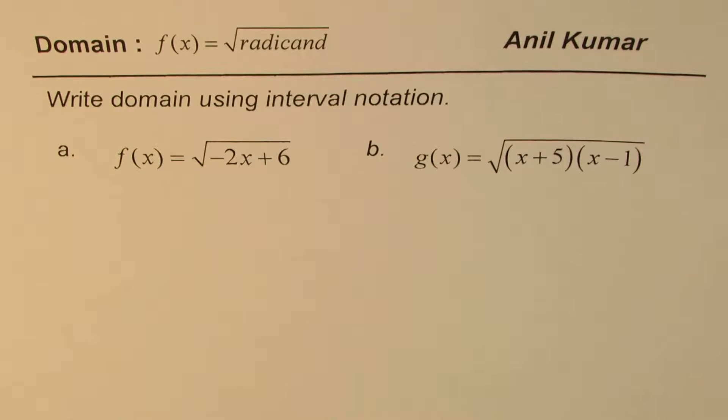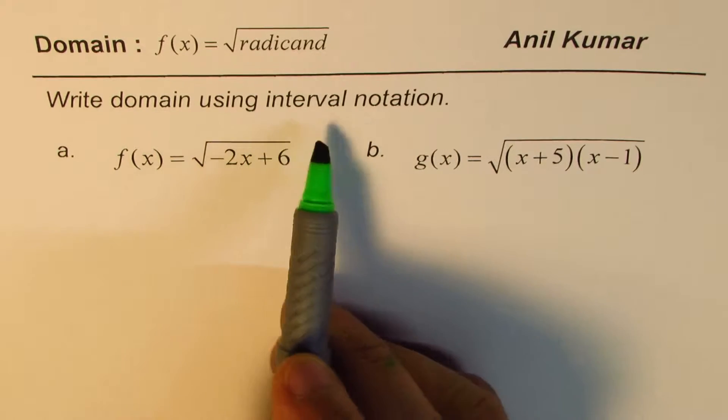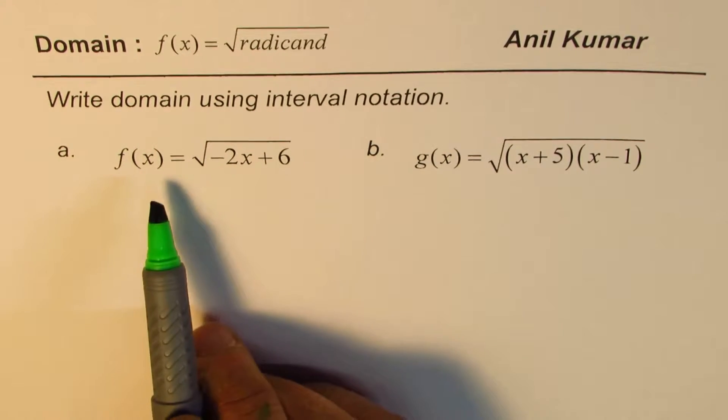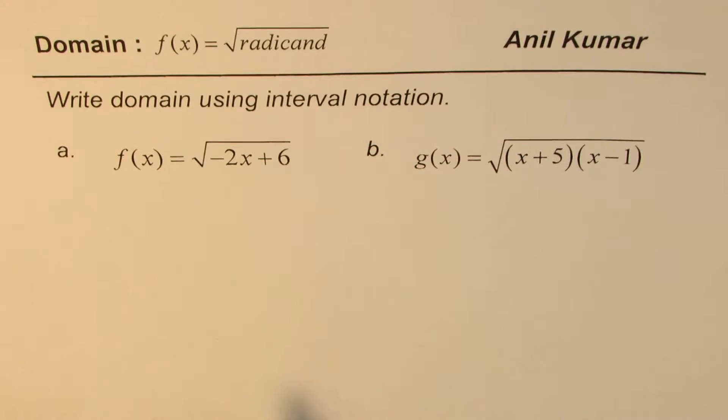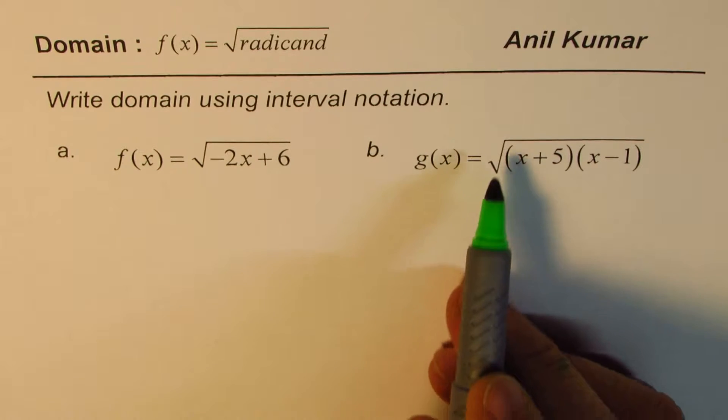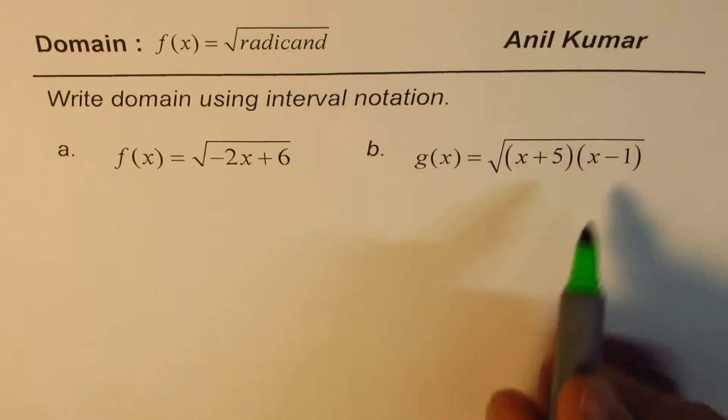I'm Anil Kumar and in this video we'll understand how to write domain of a square root function. The question here is write domain using interval notation. We have two functions: f(x) equals square root of -2x + 6 and g(x) equals square root of (x + 5)(x - 1).